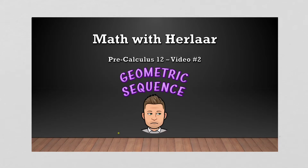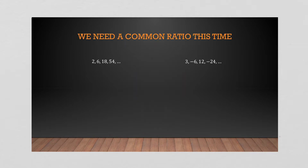Pre-calculus 12 — this is video number two on geometric sequences. Similar to an arithmetic sequence, we're going to have a list of terms, but these terms are connected not by a common difference but by a common ratio. Ratio means division — for example, one-third is a ratio, one to three. So look here at your list: two times three is six, times three is eighteen, times three...